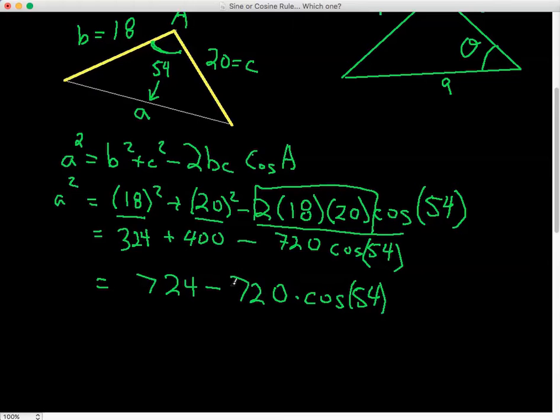So you should have 724 minus 720 times cos of 54 degrees here. Now, be careful. Do not subtract these two. That is no way. Don't do this.